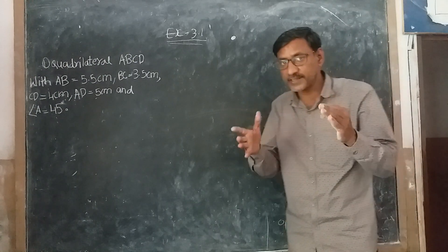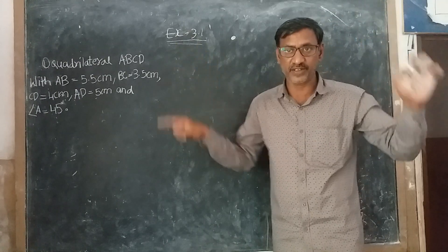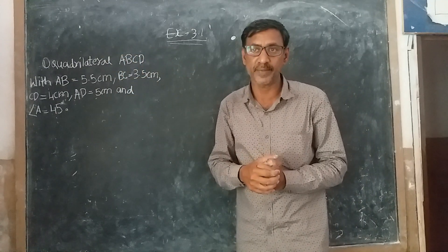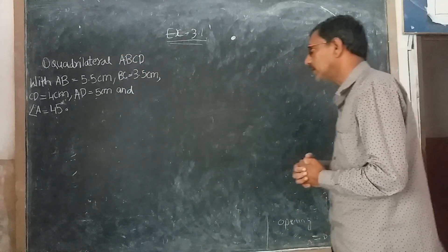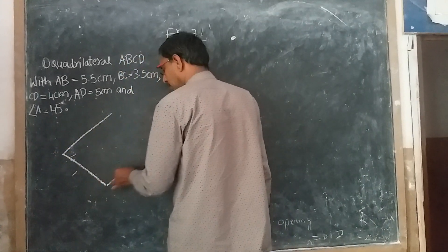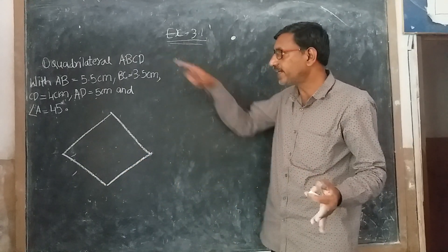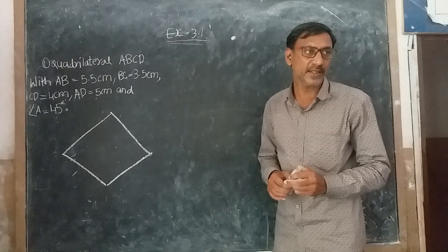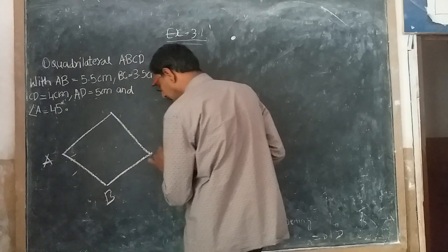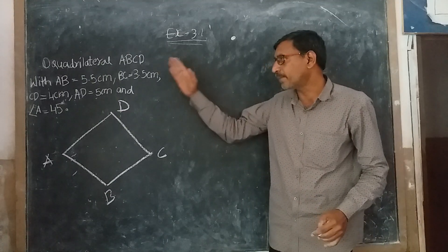If you want to construct a quadrilateral, every time keep in mind the dry rough steps — how to construct a quadrilateral from the given measurements. First, I will write a rough sketch of the quadrilateral. This is my quadrilateral and I give the vertices names A, B, C, and D.